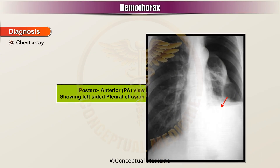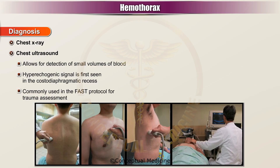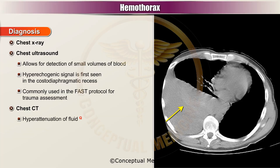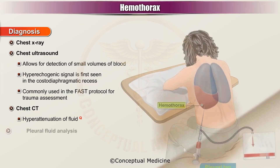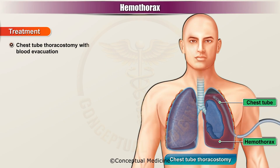Diagnosis is by chest X-ray. Chest ultrasound allows for detection of small volumes of blood. A hyperechogenic signal is first seen in the costophrenic recess, commonly used in the FAST protocol for trauma assessment. Chest CT shows hyperattenuation of fluid. Pleural fluid analysis shows red blood cells.